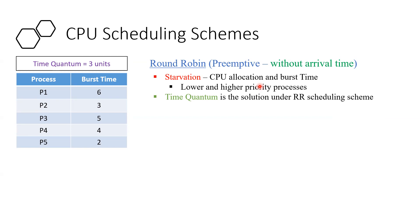This is the disadvantage of the priority scheduling scheme. If the priority is low, the wait time will be high. The issue is called starvation — the process is starved for the processor. The highest priority process gets CPU time while the low priority process is given no time.